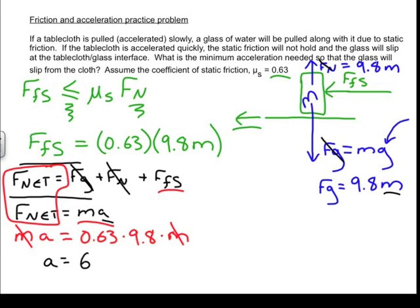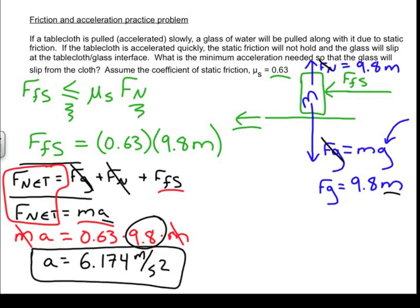Therefore my acceleration is 6.174. That's in meters per second squared because this number actually carried the units of meters per second squared as well. So that is my final answer.